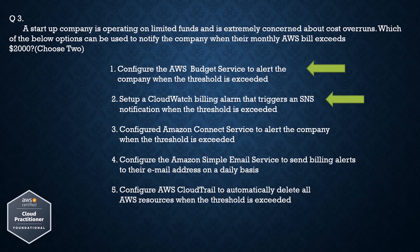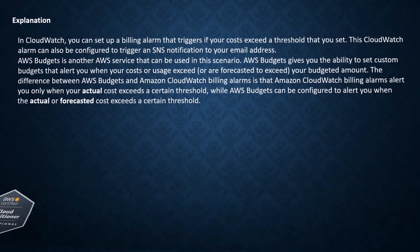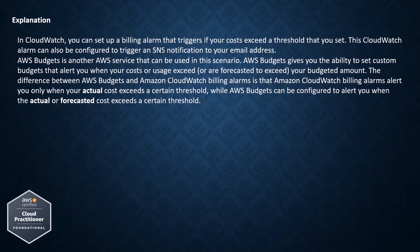The correct answers are: configure the AWS Budget service to alert the company when the threshold is exceeded, and set up a CloudWatch billing alarm that triggers an SNS notification when the threshold is exceeded. In CloudWatch, you can set up a billing alarm that triggers if your costs exceed a threshold that you set. This CloudWatch alarm can also be configured to trigger an SNS notification to your email address.